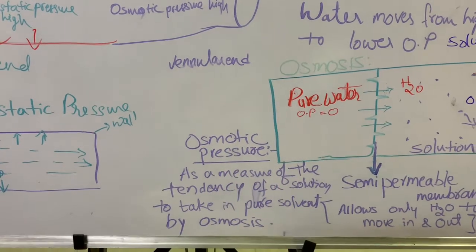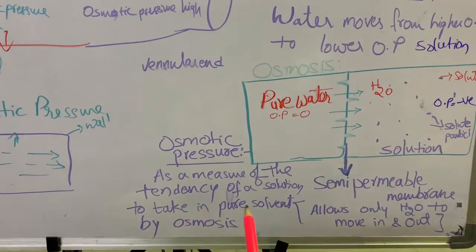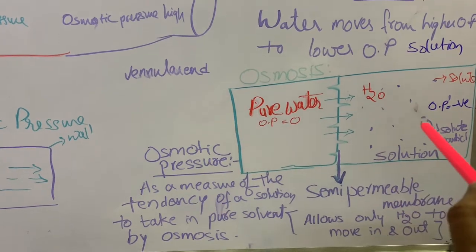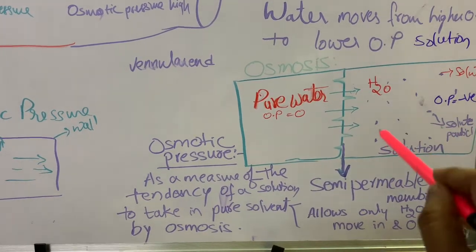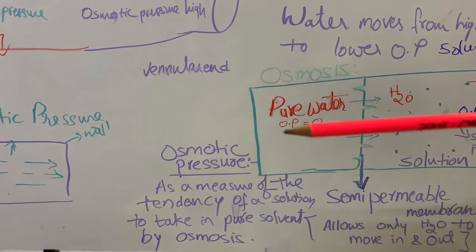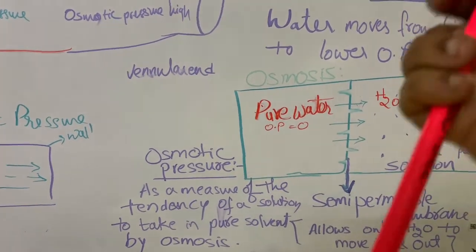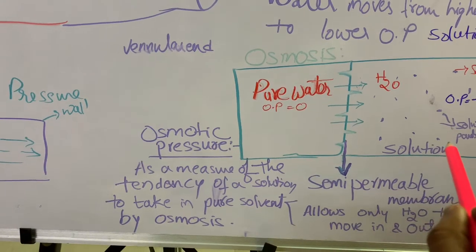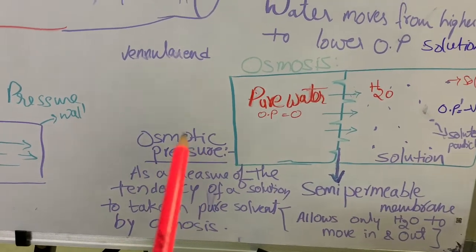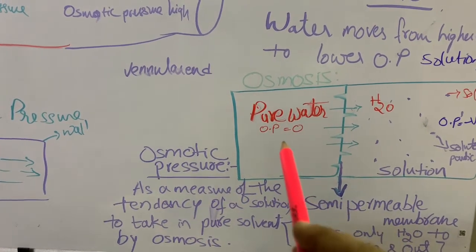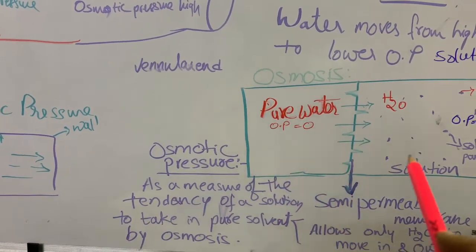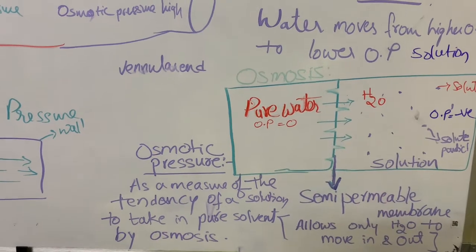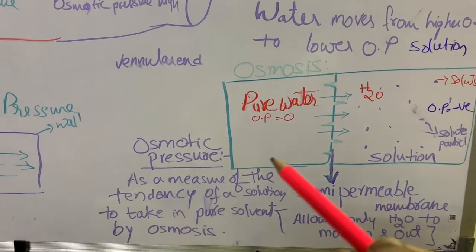Osmotic pressure is the tendency of a solution to take in water molecules by osmosis. It is a pressure which drags the water molecules into the solution. Due to this osmotic pressure, the water from a hypotonic solution enters into a hypertonic solution.